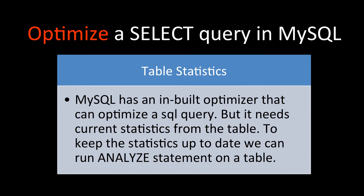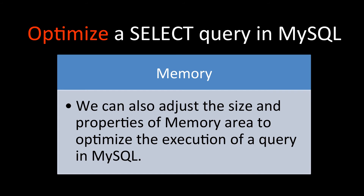For table statistics: in MySQL there is a built-in optimizer, and that optimizer can optimize SQL queries. But to run that optimizer effectively, it needs current statistics from the table. To keep the statistics up to date, we have to run the ANALYZE statement on a table so that it has current statistics, which can then be used to run an optimum query.